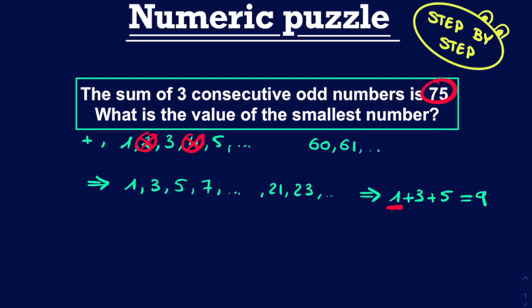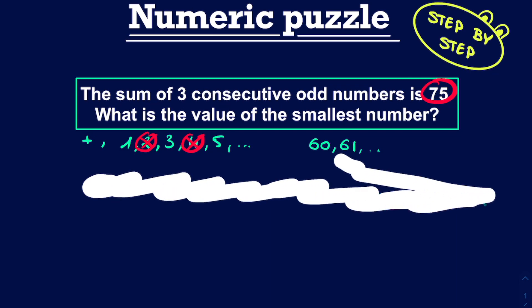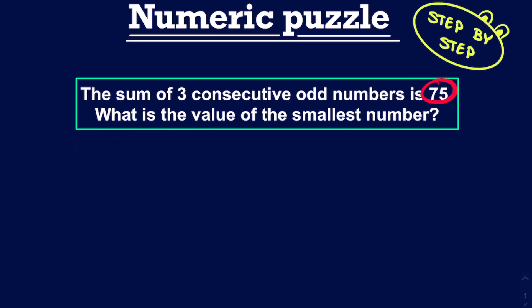So now that we translated these pieces of information into mathematics, how do we now formulate a mathematical equation such that we can solve it to find the solution? Well, what we can do is, even though we don't know the value of this smallest number, we can simply write it down as n, which will be the smallest of these three consecutive numbers.